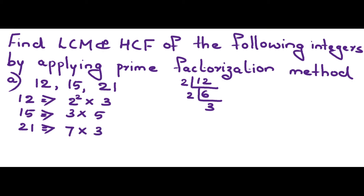LCM means least common multiple — it is the product of the greatest power of each prime factor involved in the numbers. For 12, 15, and 21: take 2² from 12, then 3 occurs once in every integer so take 3, then 5 occurs once, and 7 occurs once. So LCM = 2² × 3 × 5 × 7.